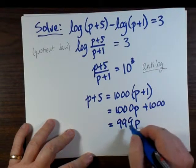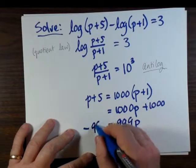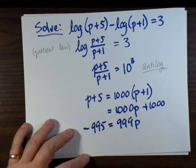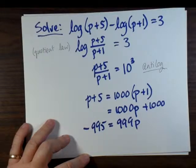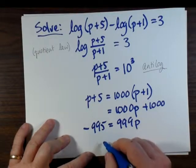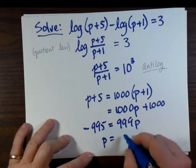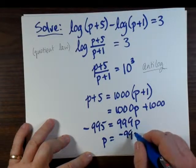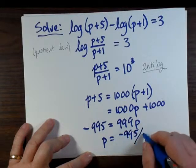Now gather our like terms. And that's 999p equals minus 995, because we are subtracting 1,000 from both sides. And solving for p then, we divide both sides by 999. We get negative 995 over 999.